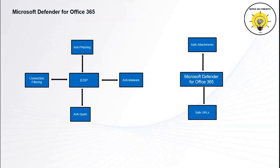Microsoft Defender for Office 365 is a cloud-based email filtering service that helps protect your organization against unknown malware and viruses. It provides robust zero-day protection and includes features to safeguard your organization from harmful links in real time. When we sign up for an Office 365 tenant, Exchange Online Protection gets activated and it starts protecting our organization from malicious contents or spam emails.